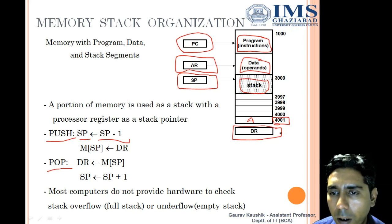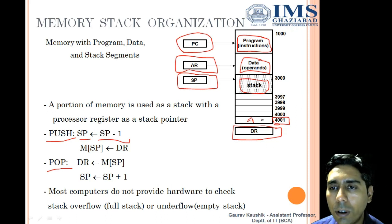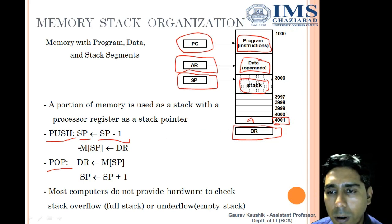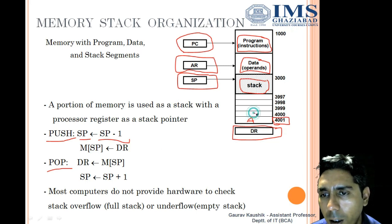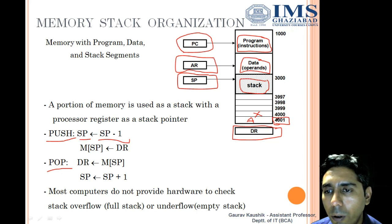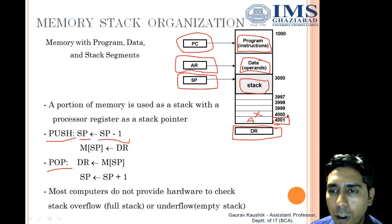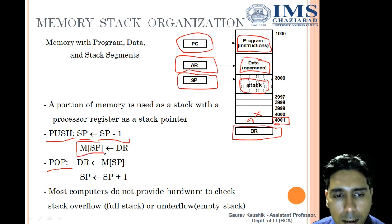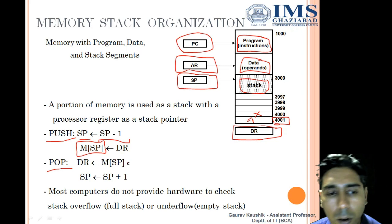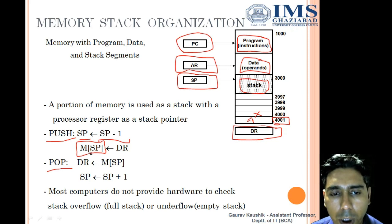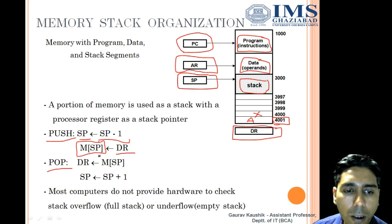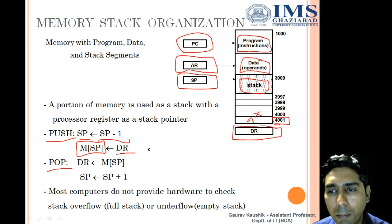When an element is inserted into the stack portion of the RAM, the stack pointer is decremented by one. So if I want to insert X next, X will be inserted at one position lesser than the previous one. M of SP refers to the memory word at the address pointed to by the stack pointer. At that position, the data inside the data register DR will be written, completing the push operation.